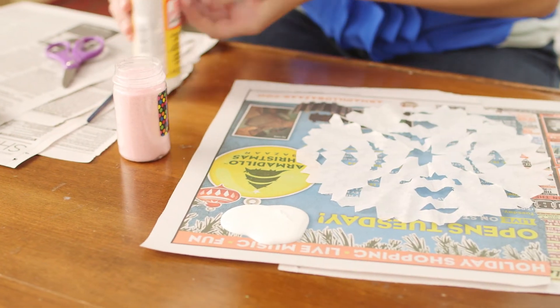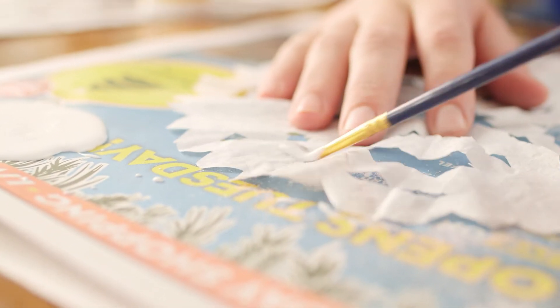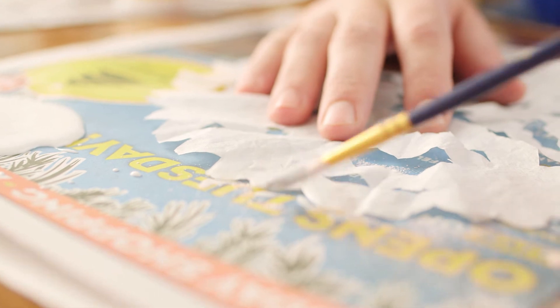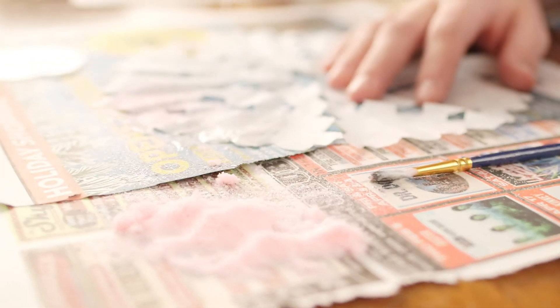For sparkling snowflakes, simply brush a thin coat of glue. Then sprinkle on some glitter. White or iridescent glitter creates a realistic look.